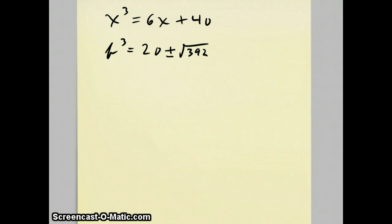Now if I take the cube root of both sides, I get b equals the cube root of 20 plus the square root of 392.